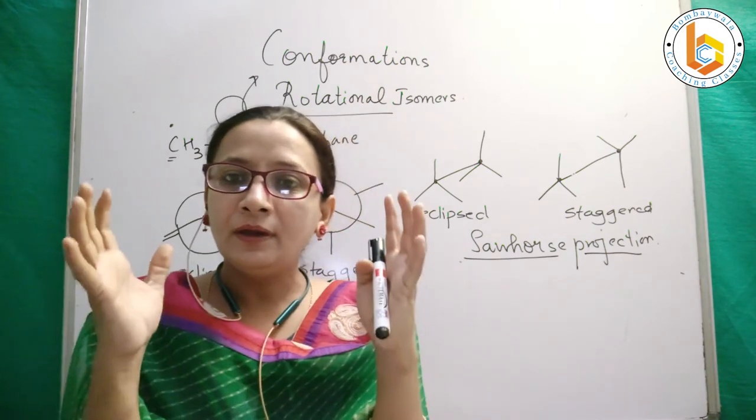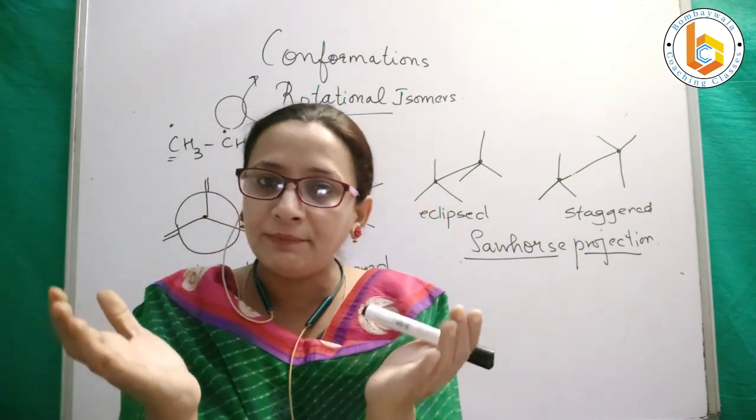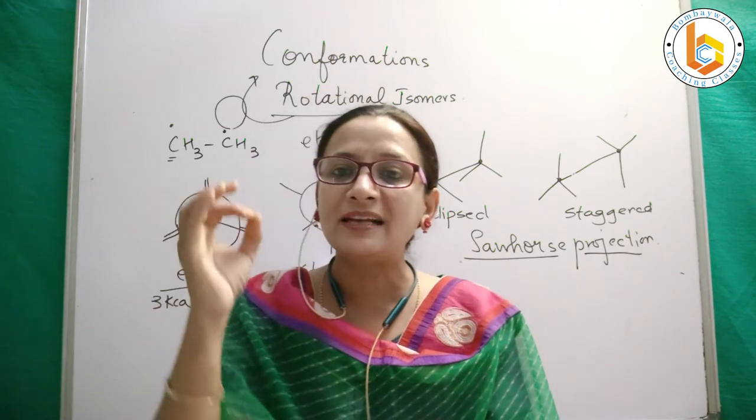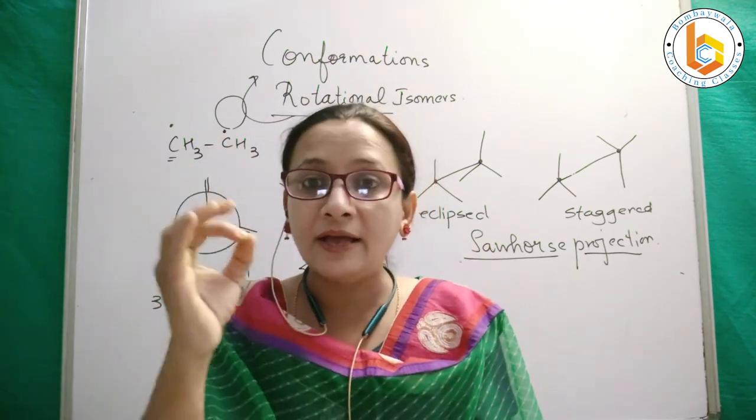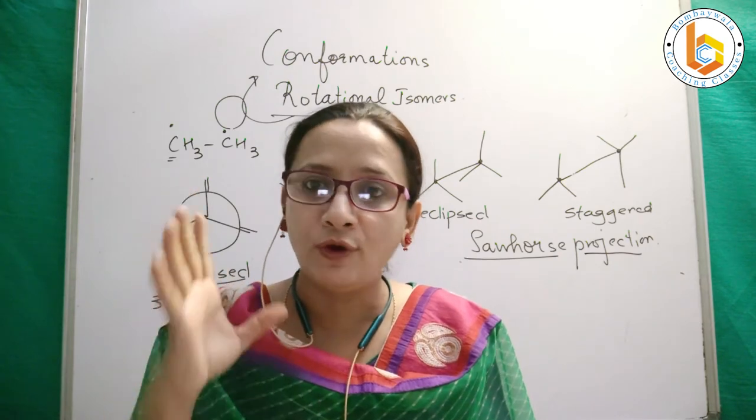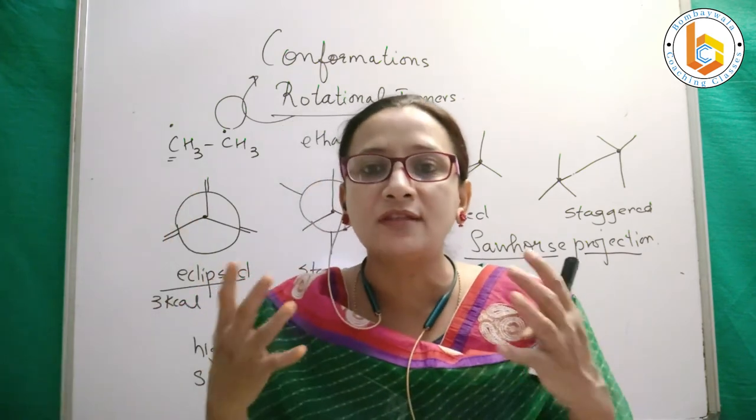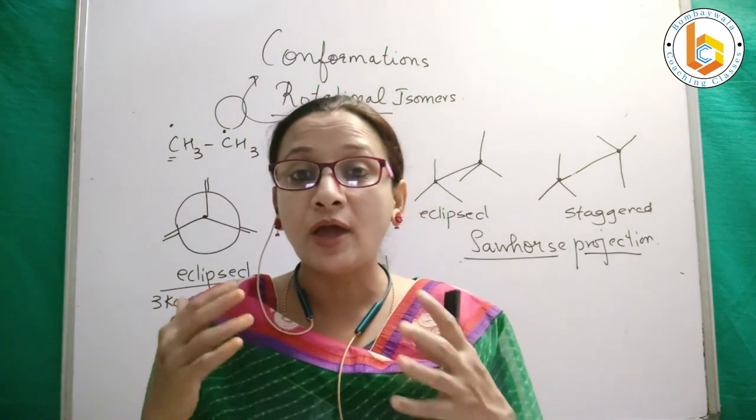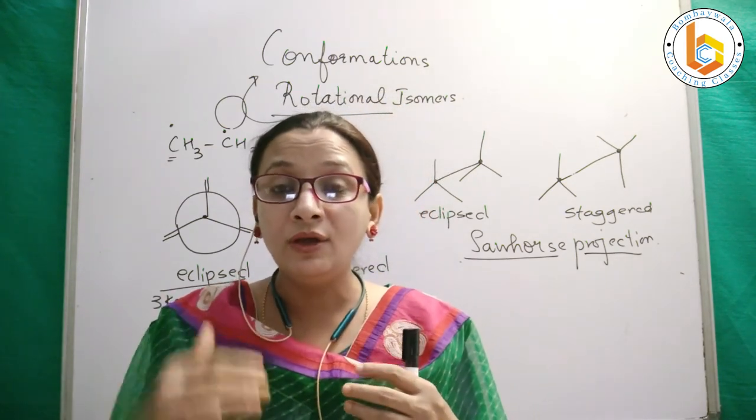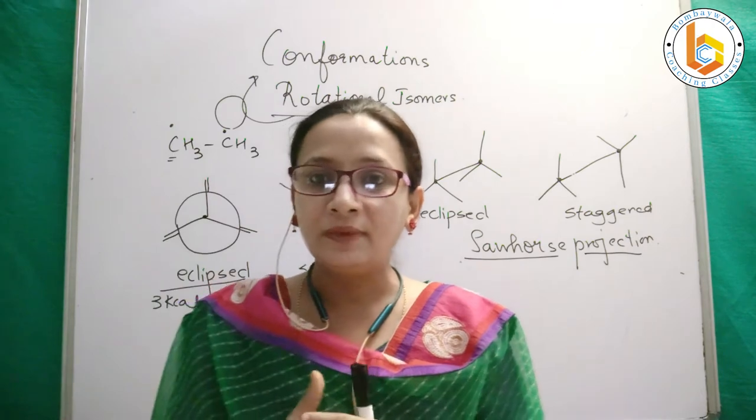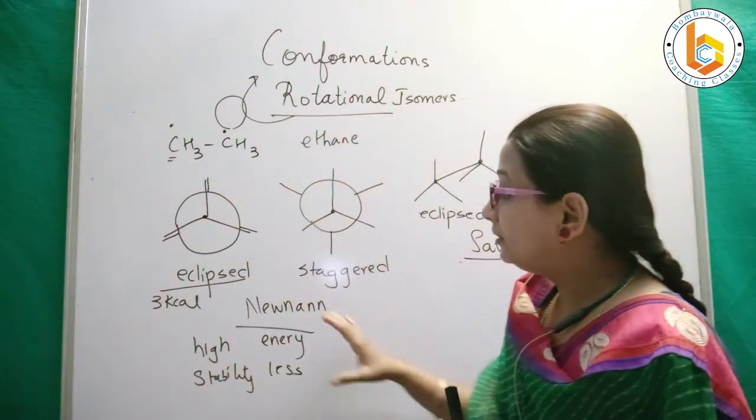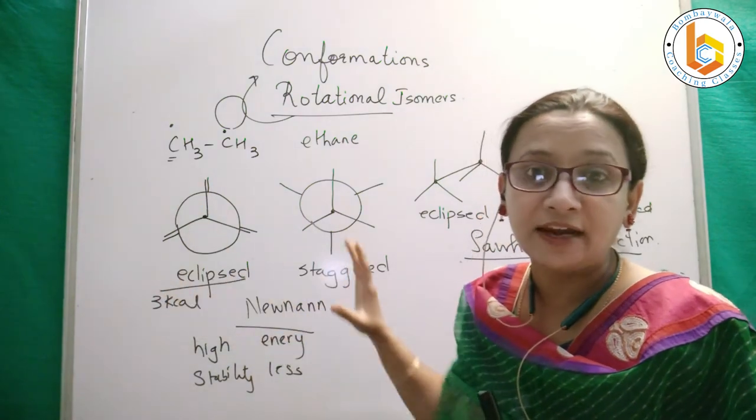But you will see that maximum ethane molecules exist in the staggered form, because everybody wants stability. They don't want to remain in high energy; they want to remain in low energy, which means high stability. This is the difference between eclipsed and staggered form.